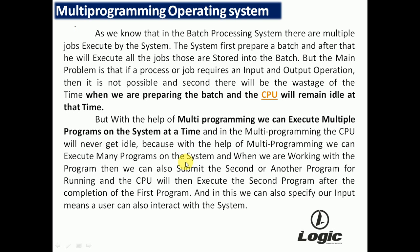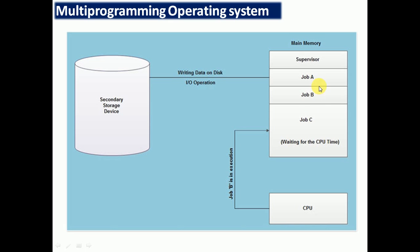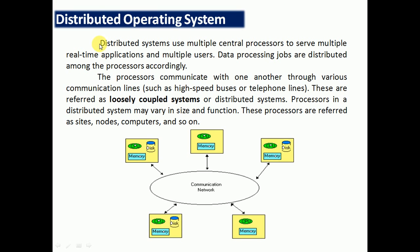In multiprogramming, the CPU never stays idle because multiple programs can be executed on the system. While working on one program, we can also submit another program for running, and the CPU executes the second program after completing the first. For example, if Job B is executing, Job C is in a waiting state, and after Job B completes, Job C executes. This is the working of a multiprogramming system.